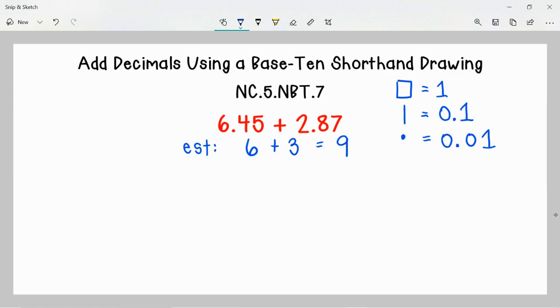Let's go ahead and begin to solve. I'm going to start with 6.45 and represent that using the Base-10 shorthand drawing. So I'm going to show 6 wholes. Next I will show 4 tenths, since in 45 hundredths there are 4 tenths and 5 hundredths. So I'll show 4 tenths. And then we'll show the 5 hundredths.